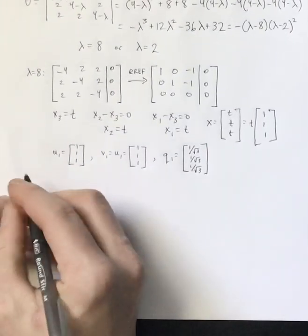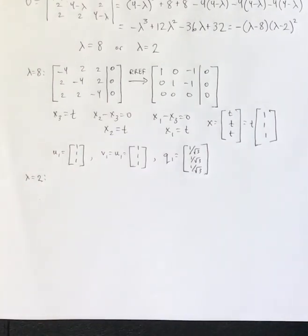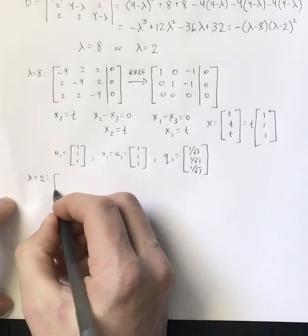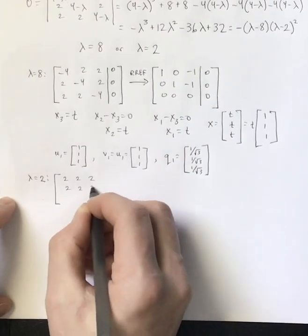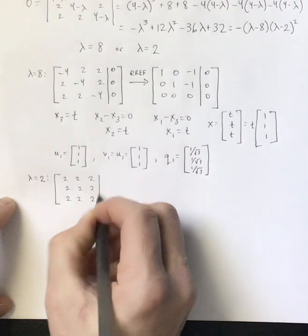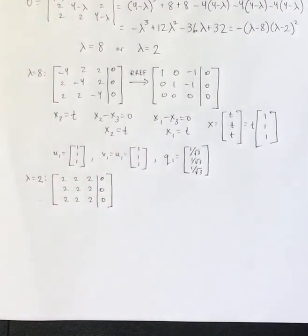So let's go ahead and look at lambda equals 2. That was our other eigenvalue. And you'll notice if I were to come up with that system, it's essentially three copies of the exact same equation.